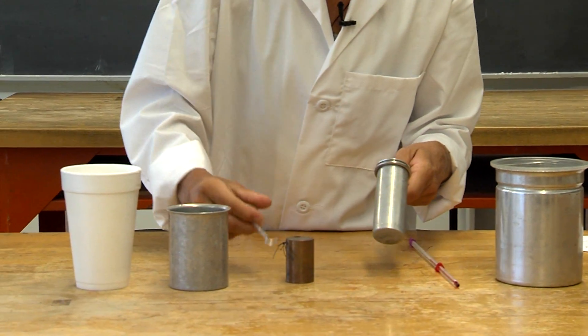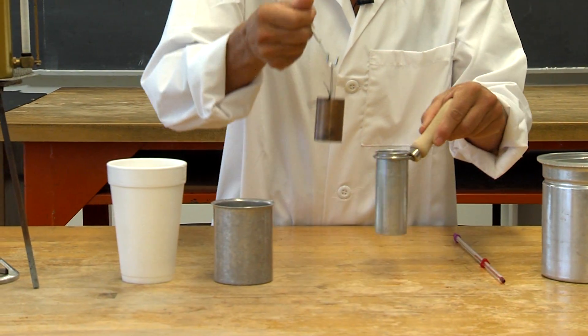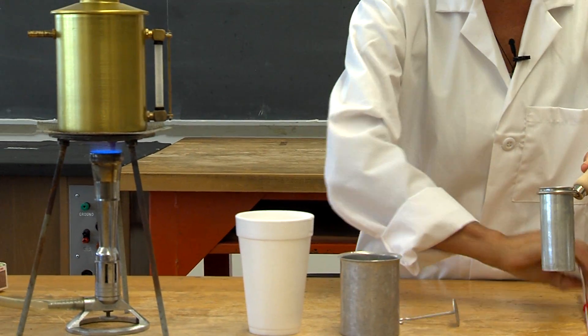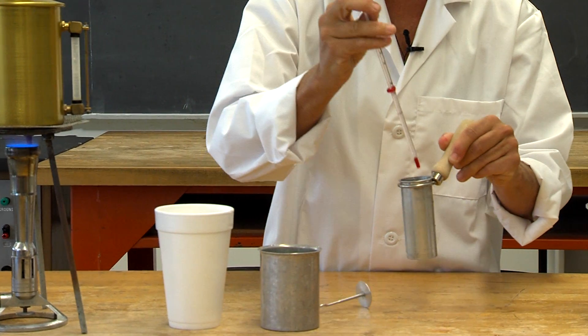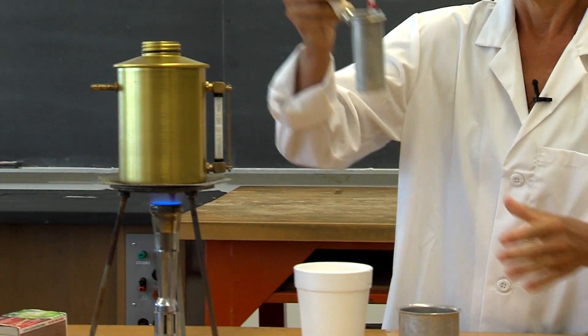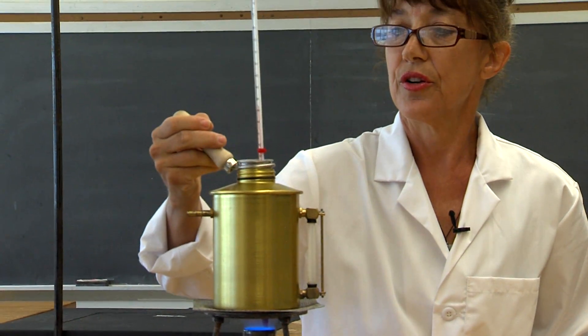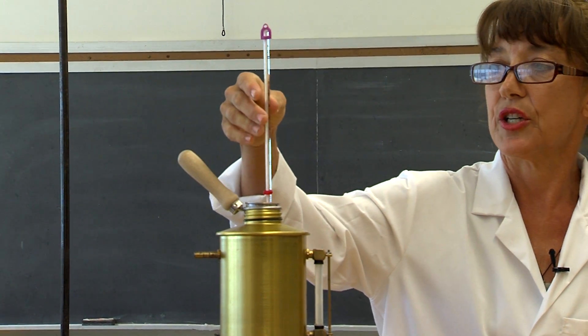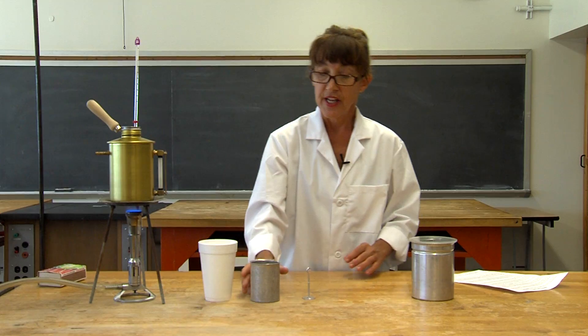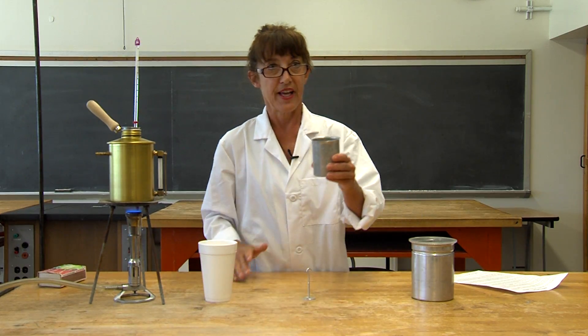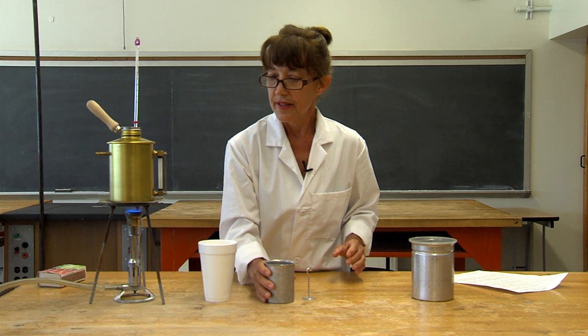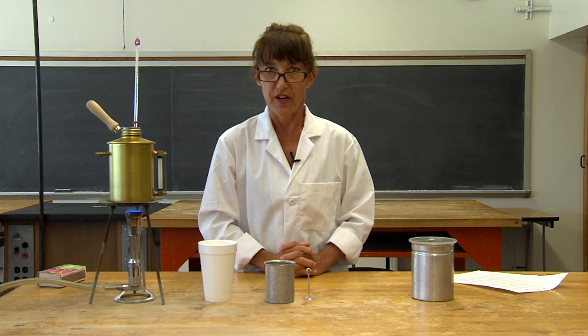First, we'll heat the copper bar up to 90 degrees using the boiler. You can put the thermometer in the hole in the copper. Keep a good eye on it and make sure when the temperature is 90 degrees, you remove the copper bar with this hanger. The temperature of the water and aluminum should be room temperature, but you might want to take the temperature of it just to be sure.